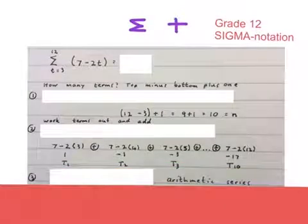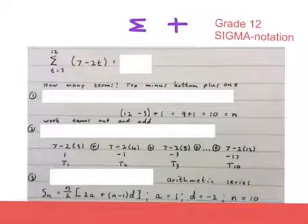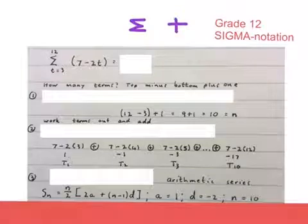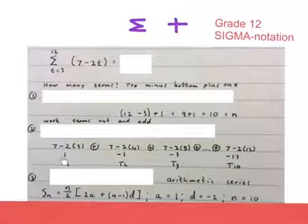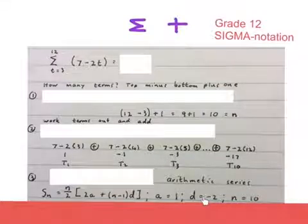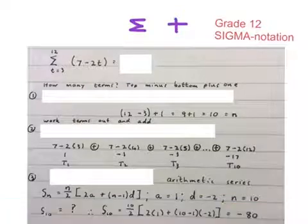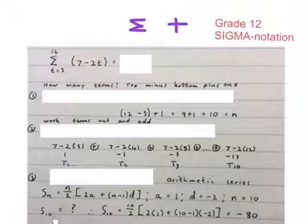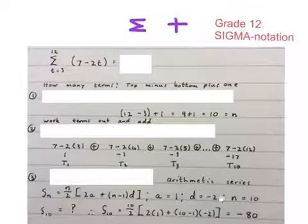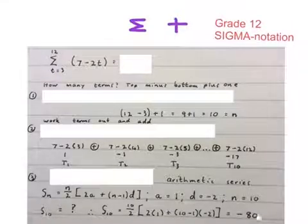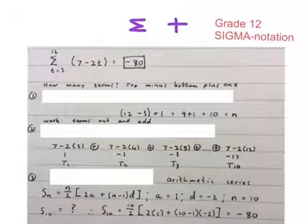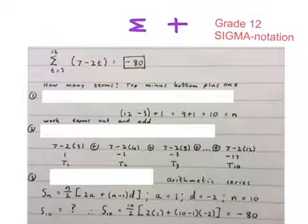We can now see that this is an arithmetic series, so I'll use the arithmetic series sum formula. A equals 1 as my first term, and my constant difference is minus 2, since minus 1 minus 1 equals minus 2, and minus 3 minus minus 1 also equals minus 2. From the beginning I know I've got 10 terms, so I work out S₁₀, substitute all my information into the formula, and the final answer is minus 80.